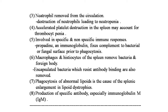The third function of the spleen: neutrophils are removed from the circulation, destruction of neutrophils leads to neutropenia, and accelerated platelet sequestration in the spleen may account for thrombocytopenia. In specific and nonspecific immune responses, properdin (an immunoglobulin) fixes complement to bacterial or fungal surfaces prior to phagocytosis. Macrophages and histiocytes of the spleen remove bacteria and foreign bodies, including encapsulated bacteria which resist antibody binding.